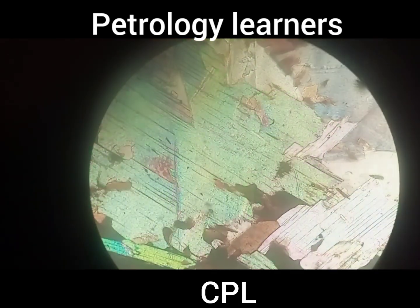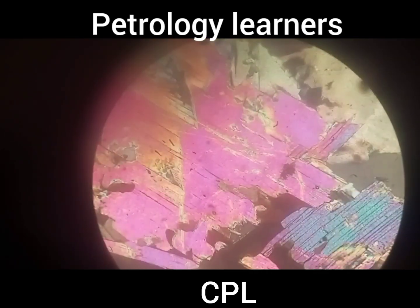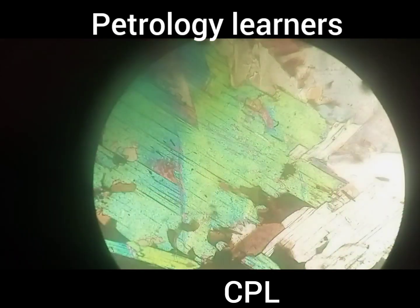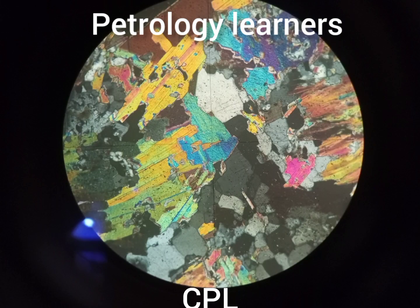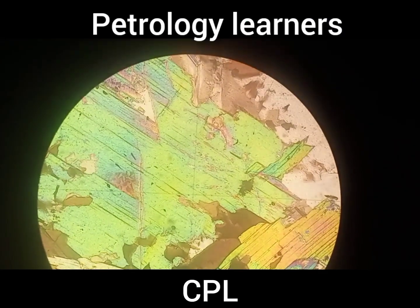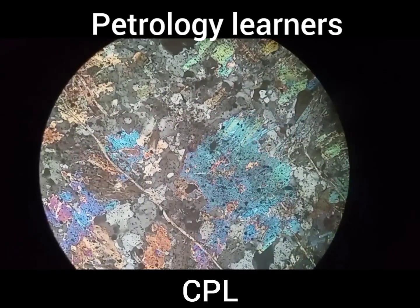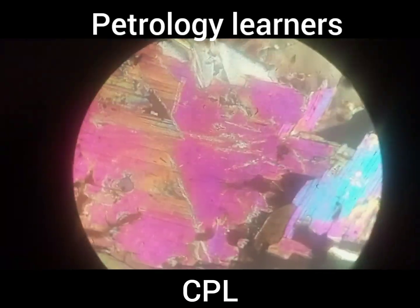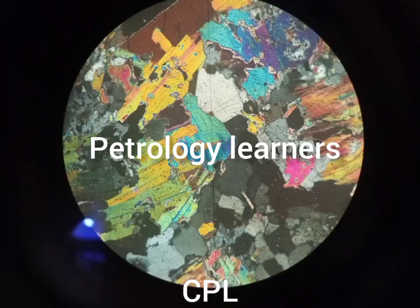On rotation of the stage in cross polarized light, it can show yellow, blue, orange, pink, and even green colors. Muscovite shows second order interference colors, which are moderate to high.